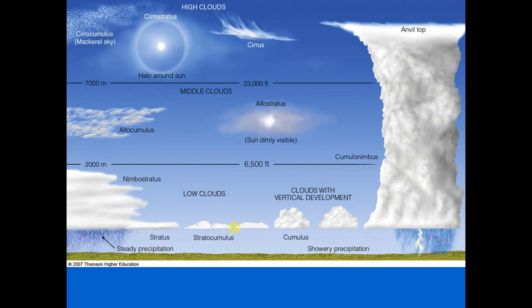Stratocumulus is a low, lumpy cloud that appears in rows or patches of rounded masses, often with blue sky visible between cloud elements. It often appears near sunset as the spreading remains of a larger cumulus cloud. The color ranges from light to dark gray, often multicolored with darker gray bottoms and lighter sides. To distinguish between stratocumulus and altocumulus, hold your hand at arm's length: altocumulus cloud elements are about the size of your thumbnail, while stratocumulus appears the size of your fist.